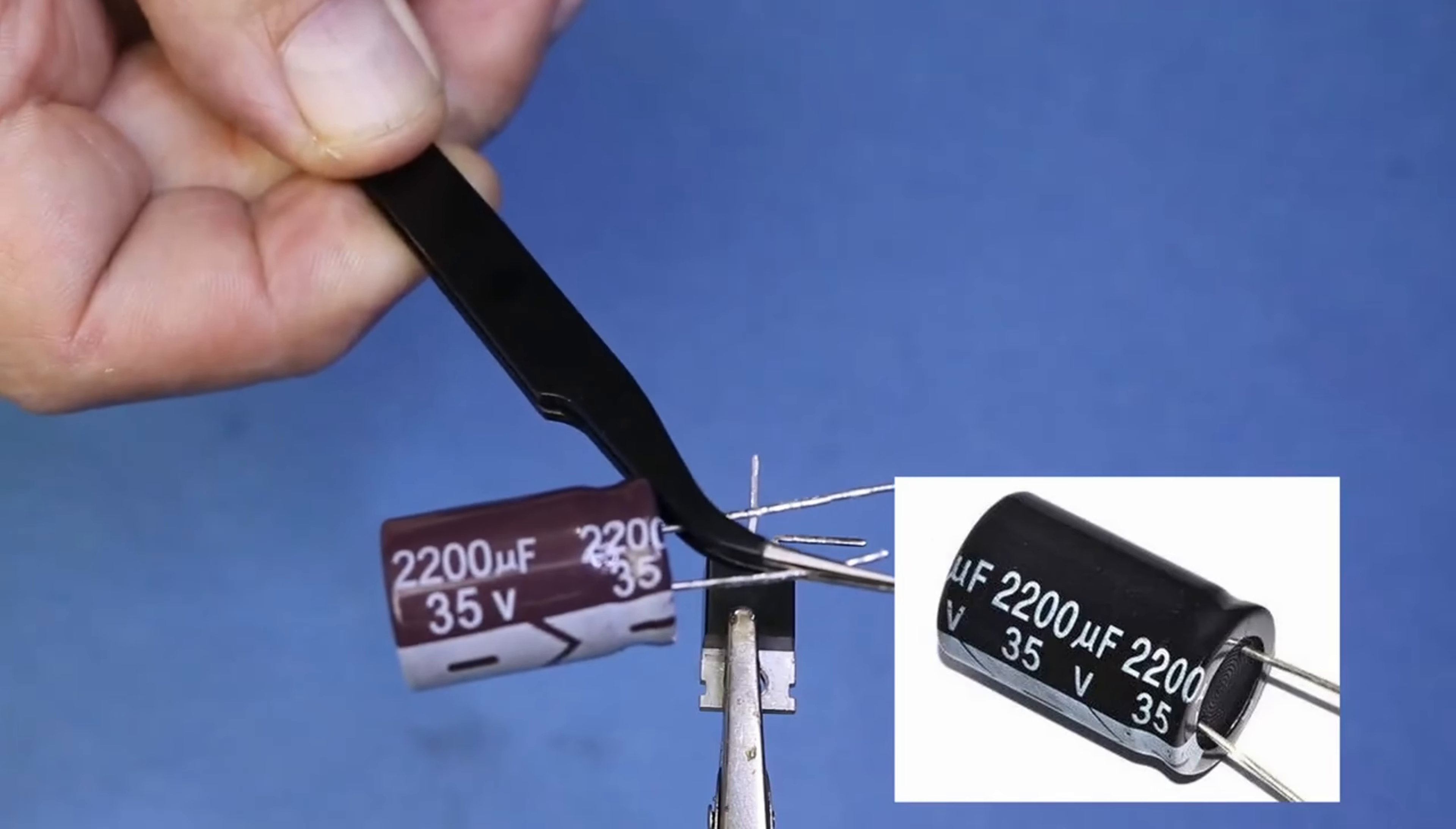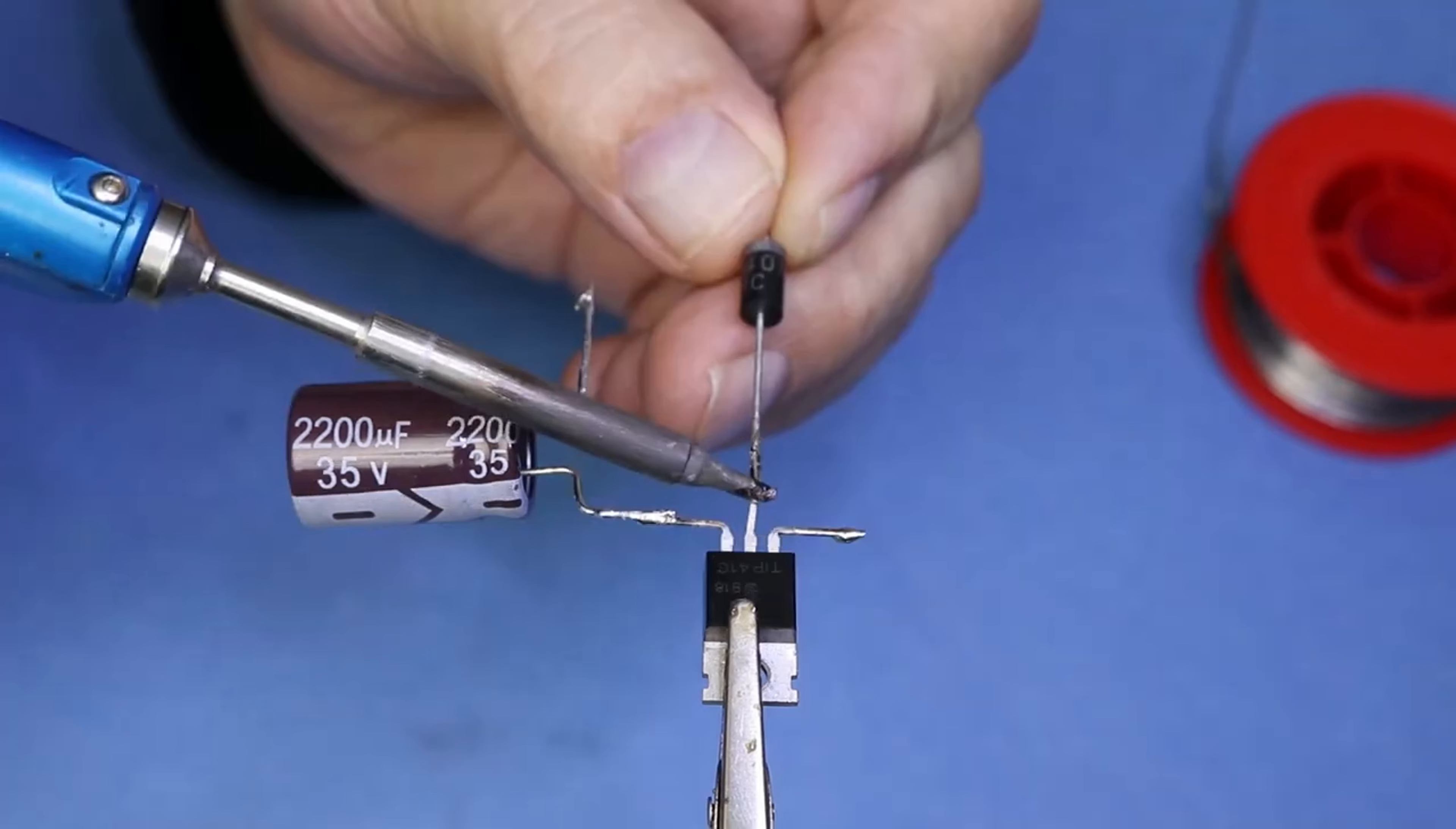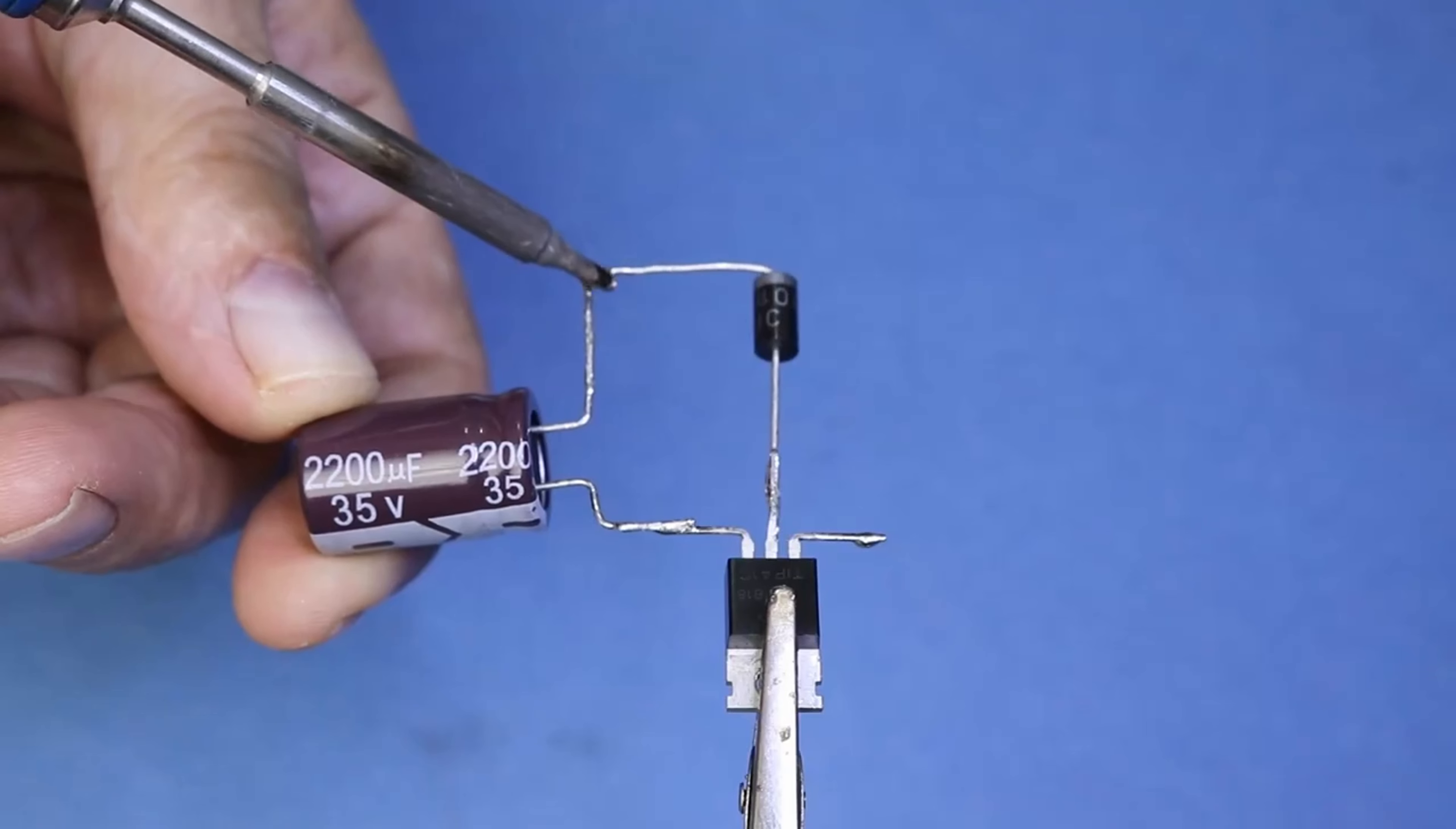You can create a DC-DC booster circuit using simple components. Here's how to make a 3.6V to 40V DC-DC booster circuit with the components you provide.